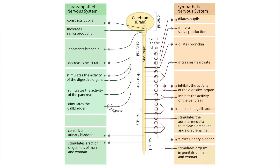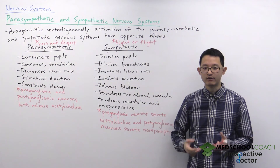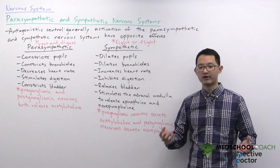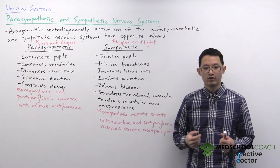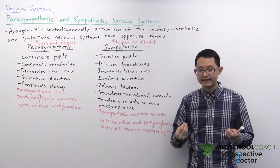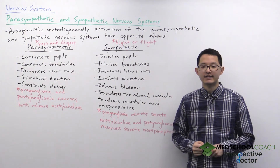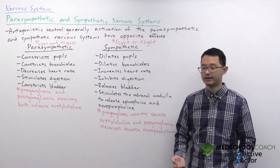For example, you can see that activation of the sympathetic nervous system results in pupil dilation. This makes sense because if an animal is in the woods in the dark and it's running away from a predator, it wants to dilate its pupils to let more light into its eyes so it can see better and be able to better escape.